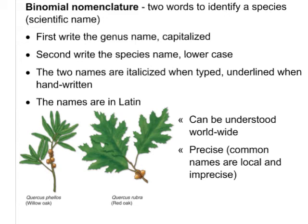One thing you've probably noticed is that the species name on some of these examples was a two-word name, and that's an important thing to explain. It's called binomial nomenclature — the scientific name. Every species is identified by its scientific name that uses binomial nomenclature. The word 'bi' means two, so there are two words to identify each species. First, we always write the genus name and capitalize it. Then we write the species name and it's always lowercase. When handwritten, we underline the whole name; when typed, the two names are italicized and always in Latin.